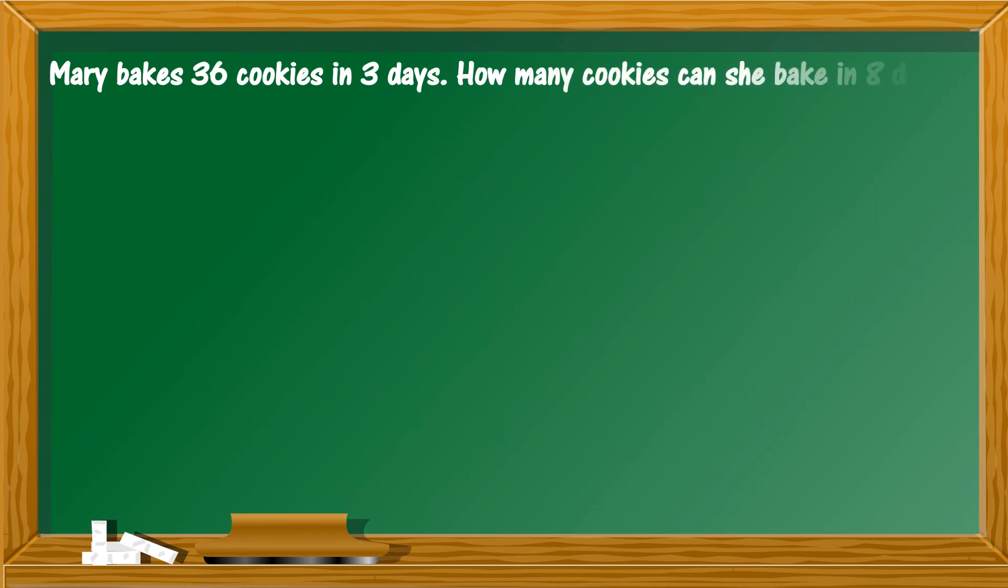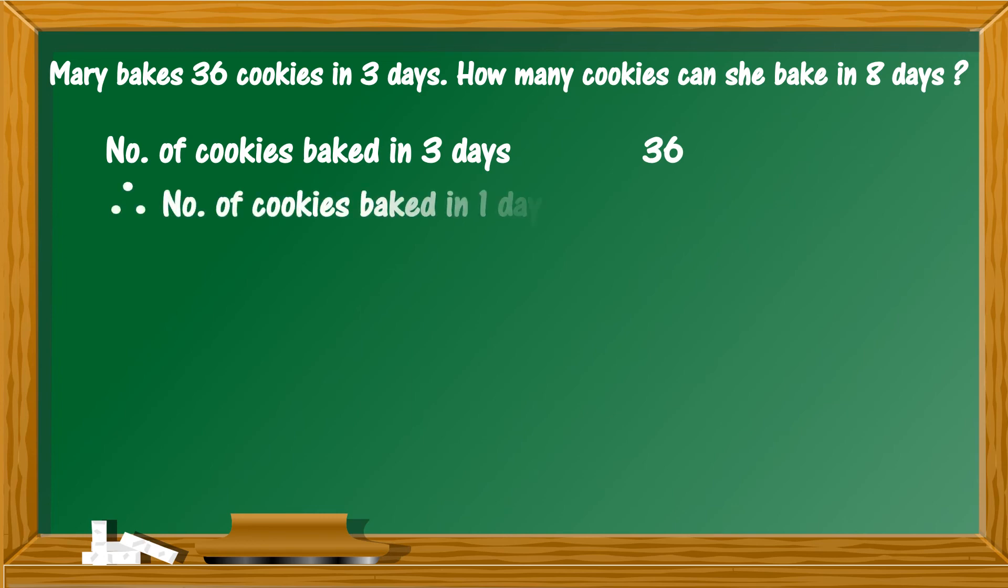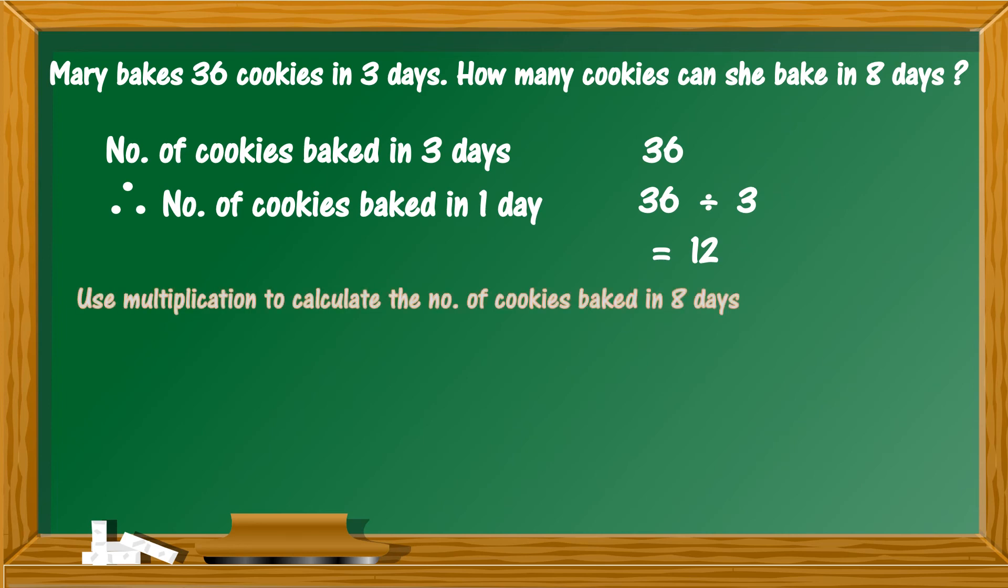First, use division to calculate the number of cookies baked in one day. Number of cookies baked in three days is 36, therefore number of cookies baked in one day is 36 divided by 3, equal to 12 cookies.